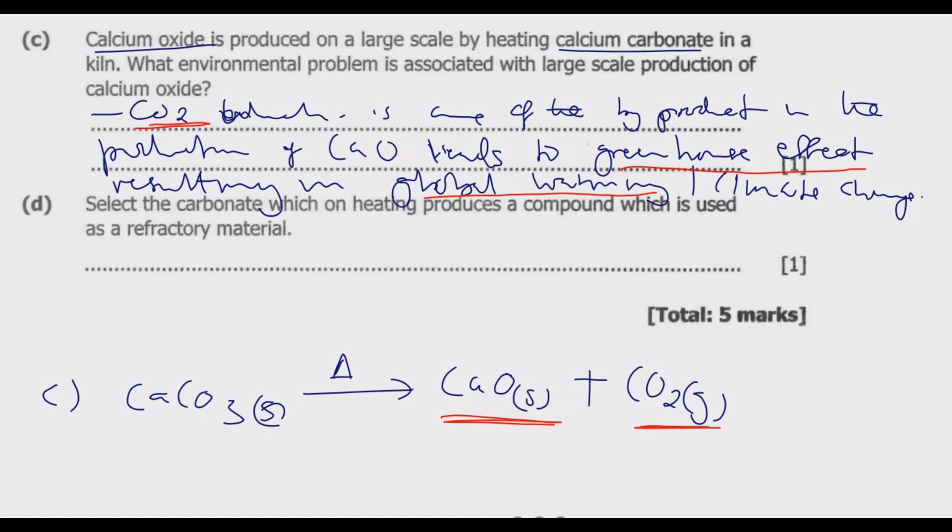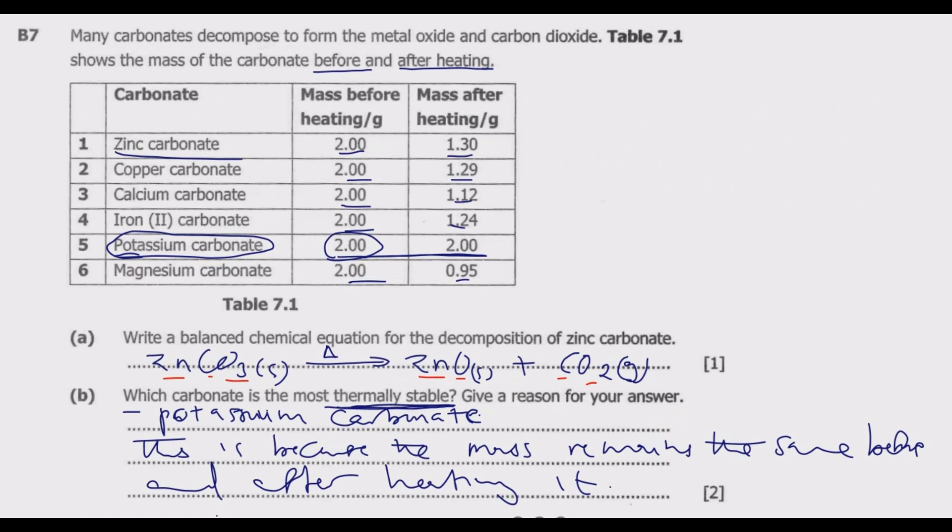Question (d): Select the carbonate which on heating produces a compound which is used as a refractory material. There are basically three key oxides that are used as refractory material.